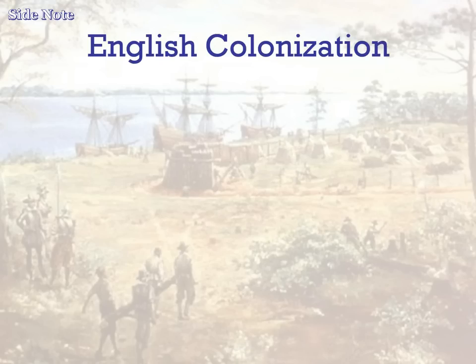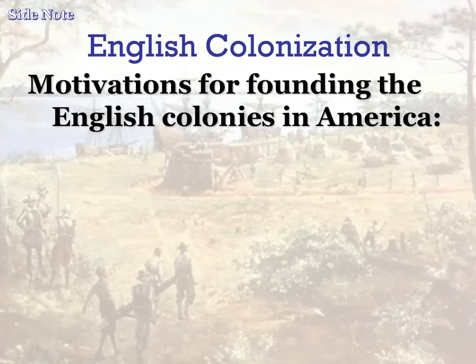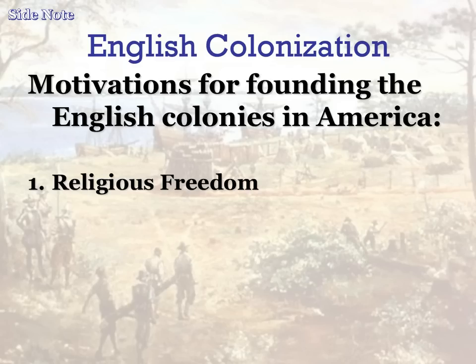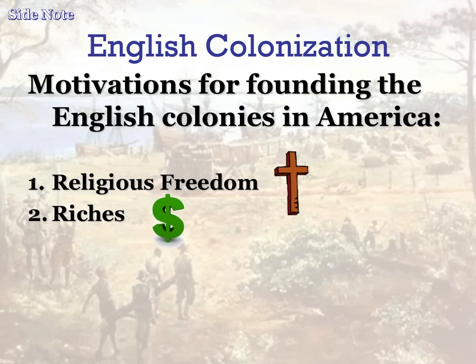The first thing we're going to start out with is the idea of English Colonization. The English want to colonize because they are motivated to colonize. The Spanish have had success, the French are having success in America, and so the English want that same kind of success. There are really just four reasons why people came to the New World from England: religious freedom was the first, then riches, making money, then land.